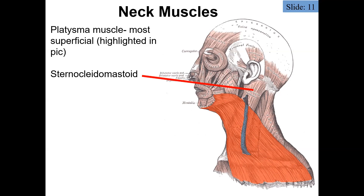If we strip away the platysma muscle, we encounter the sternocleidomastoid. As the name implies, it attaches to the sternum, the clavicle, and the mastoid process of the temporal bone — hence the term sternocleidomastoid.